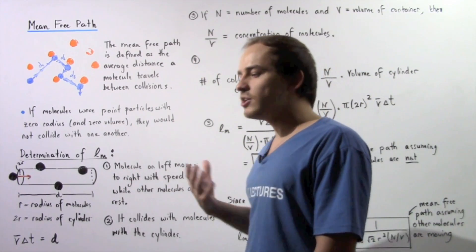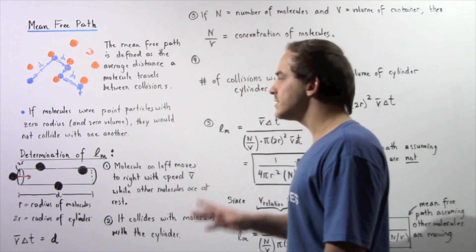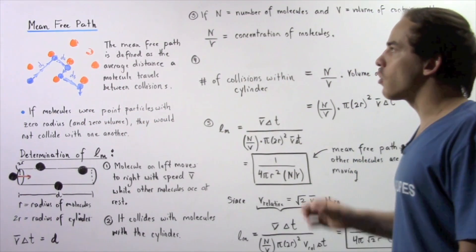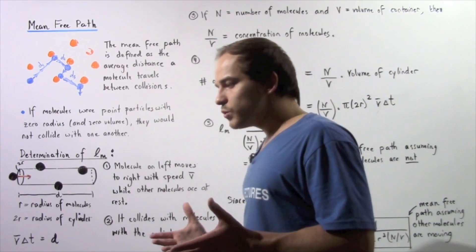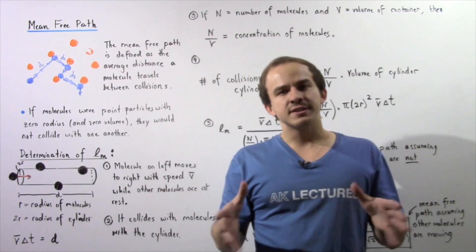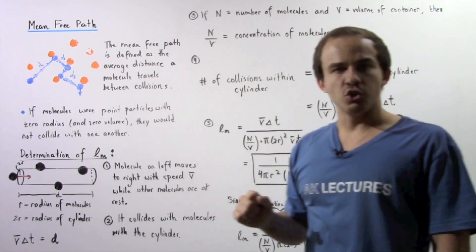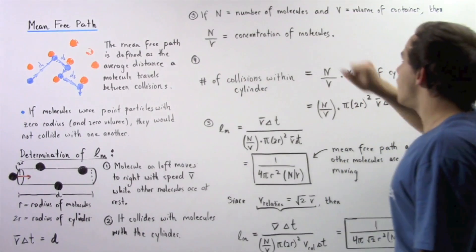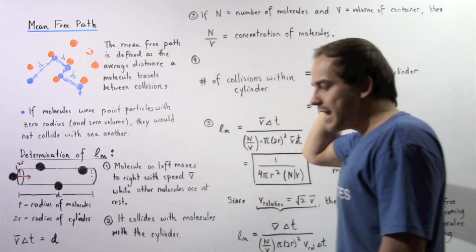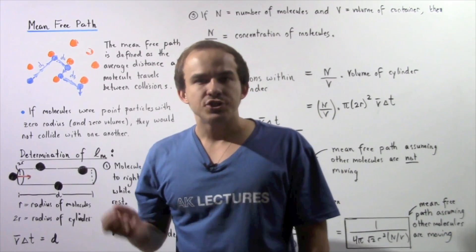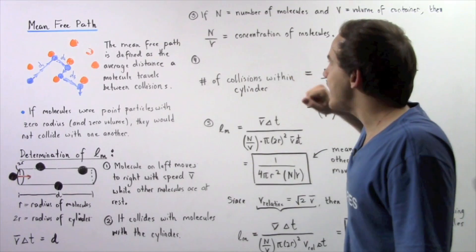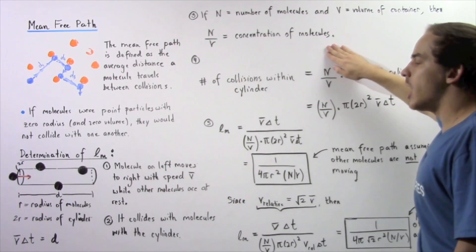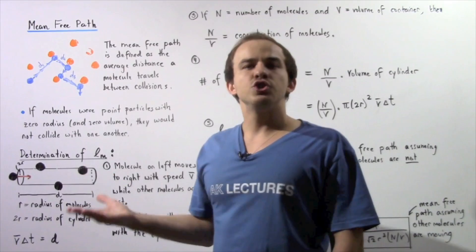Now generally speaking, what is the equation that gives us the mean free path? Let's suppose we have a certain container with N total molecules inside, and the volume of our container is given by V. Then we define the concentration of molecules within our container as N divided by V — the ratio of the number of molecules to the volume.